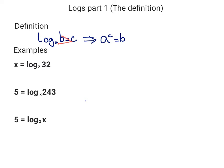Now we can use this definition to help us answer these three questions here. So let's look at the first one. We've got X equals log to the base 2 of 32. So that means that 2 to the power of X equals 32. So what power do we raise it to? Well we've got 2, 4, 8, 16, 32 — that was five times. So that implies that X equals 5.